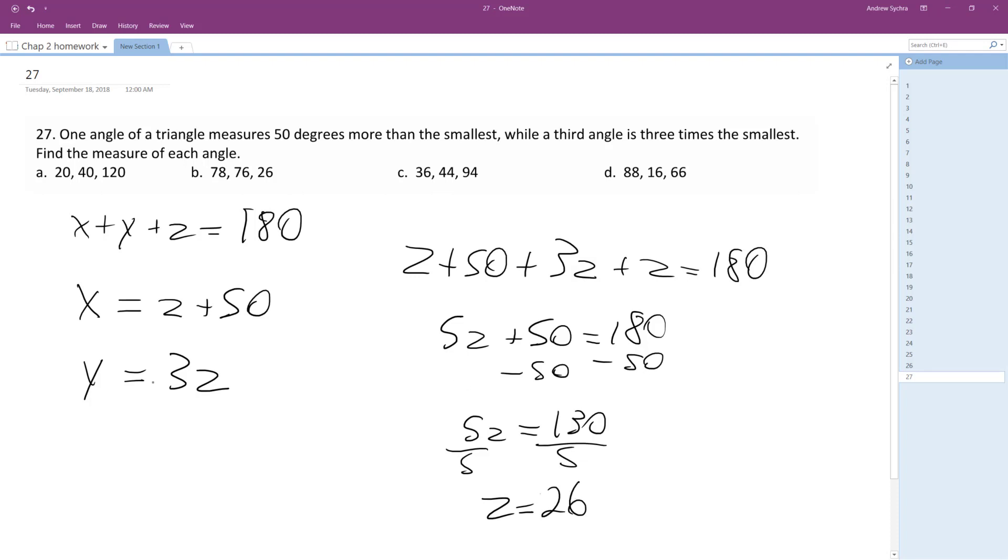So that means the one that's three times as large is going to be 78. And Z plus 50 is 76 degrees. 78, 76, 26.